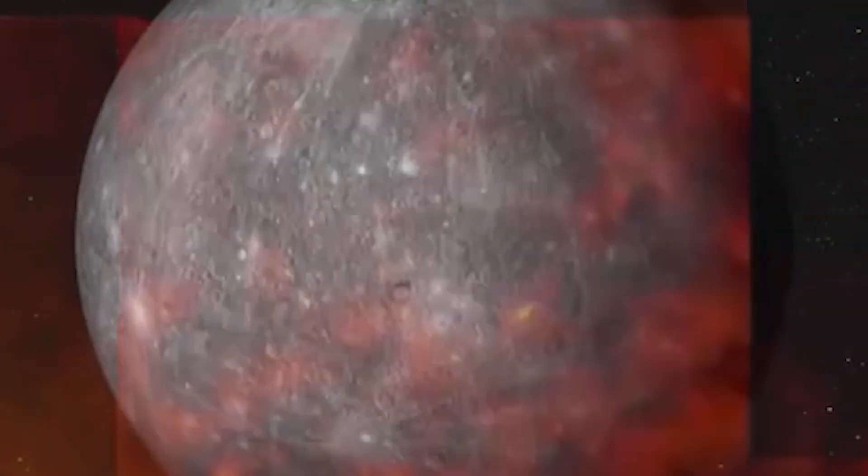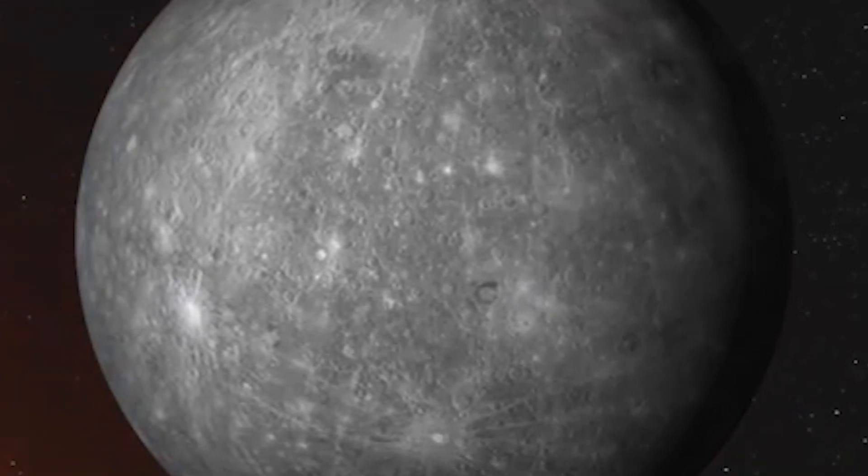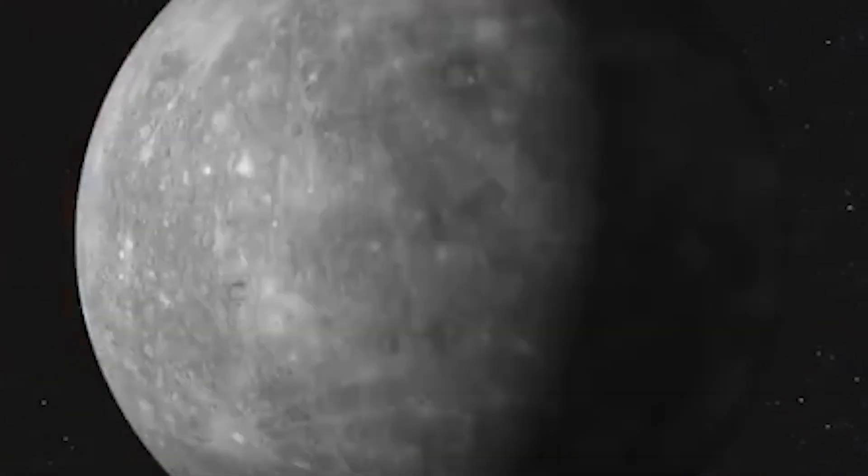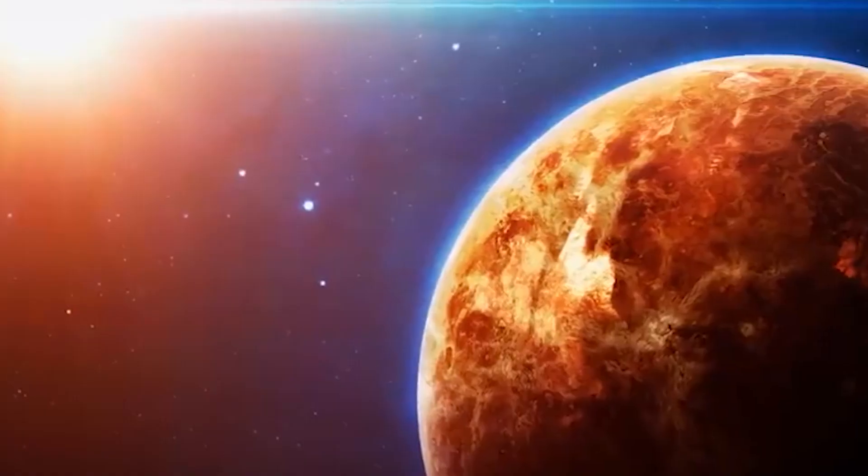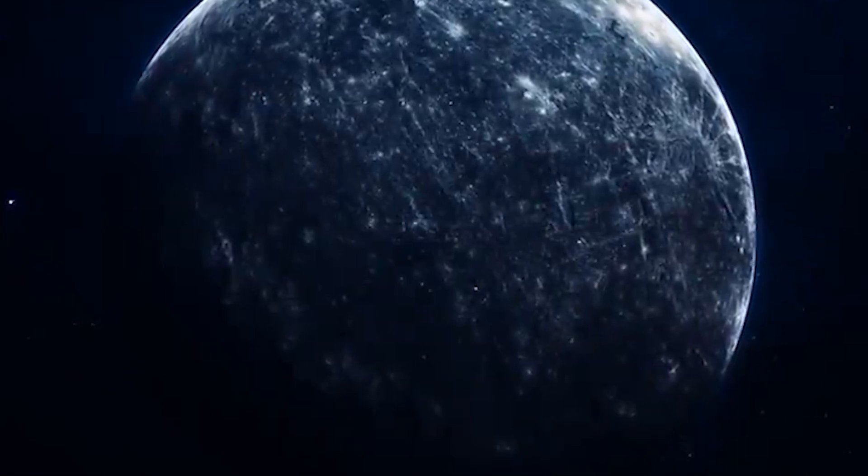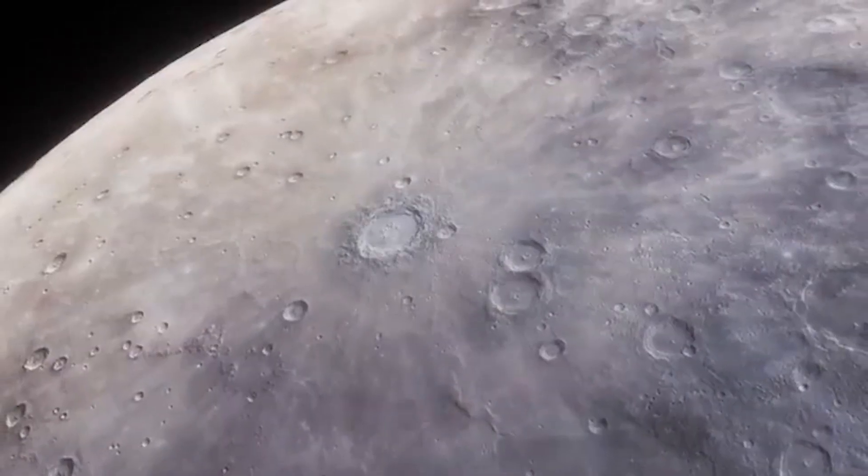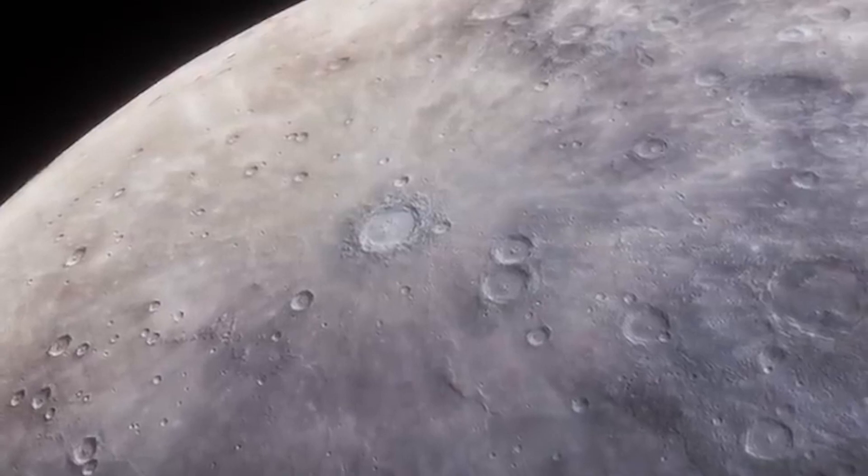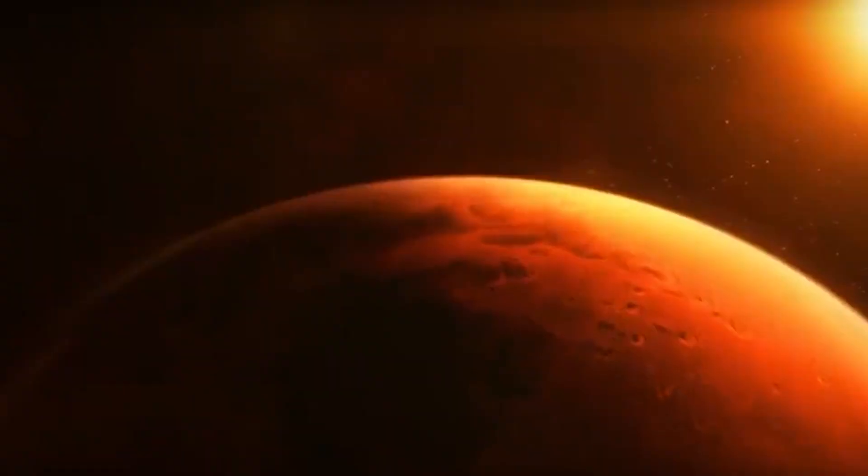According to the calculations done by Winn, the extrasolar planet K2-141b has winds that reach speeds of approximately 5,000 kilometers per hour, and the depth of its magma ocean is predicted to be approximately 140 kilometers. On one side of the world, the unusual winds are extremely prevalent, whereas they are completely non-existent on the other.